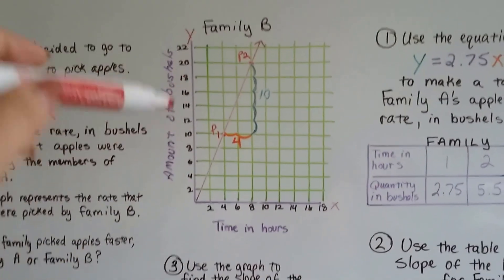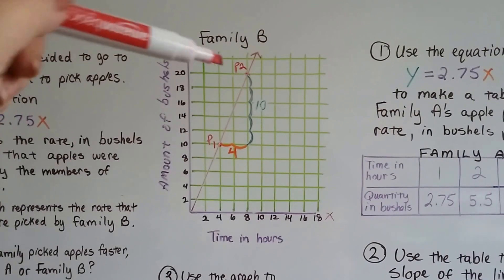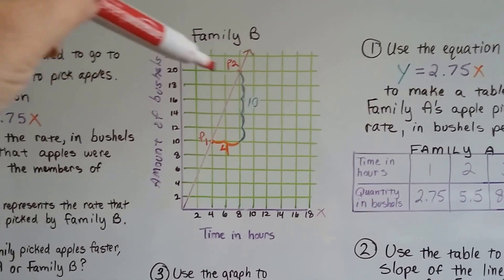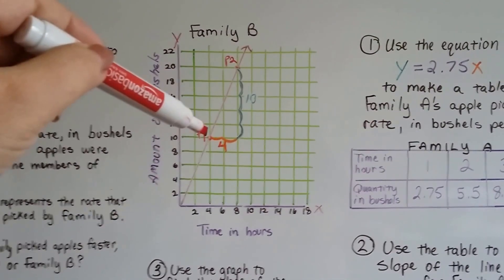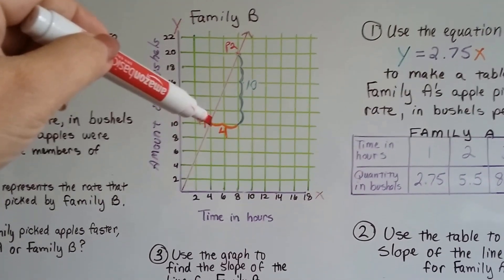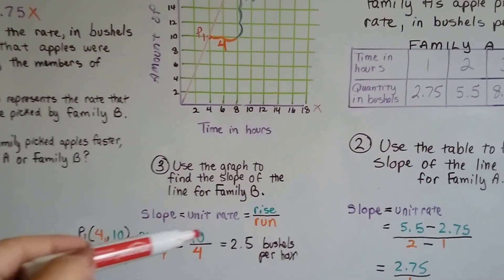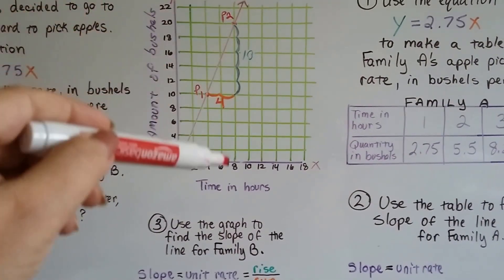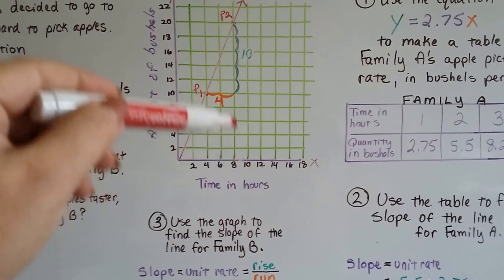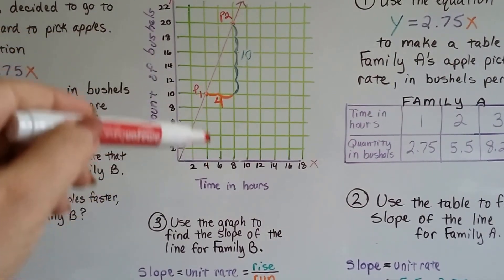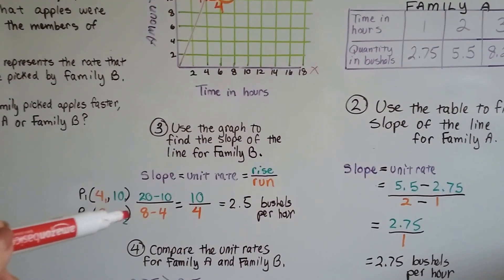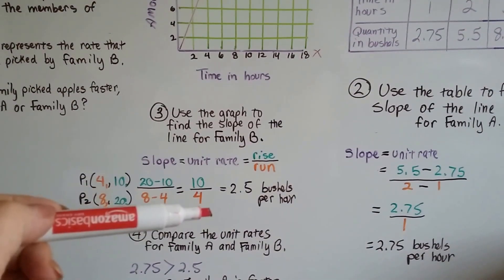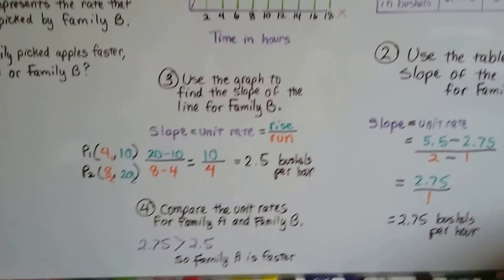We can also take the y values for point number 2, which is this one, and that's a 20. And we can take away the 10 from point 1's y value. 20 take away 10 is 10. We take away the second x value, which is an 8, and we subtract the first x value, which is a 4. 8 take away 4 is 4. That's our 10 over 4, our rise over run. That's 2.5 bushels per hour.